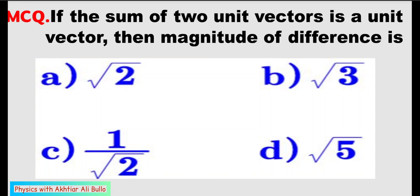If the sum of two unit vectors is a unit vector, then the magnitude of their difference is: (a) √2, (b) √3, (c) 1/√2, (d) √5.